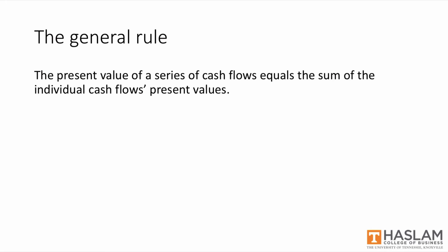The previous example illustrates a much more general rule about finding the present value of a series of future cash flows. In words, the general rule is: the present value of a series of cash flows equals the sum of the individual cash flows' present values. You can simply calculate each individual cash flow's present value one at a time, and then add up the answers to get the present value of the series. This will be true for two different future cash flows, or for a thousand different future cash flows — it's very flexible.